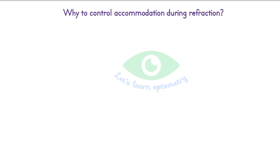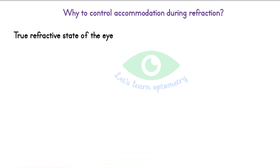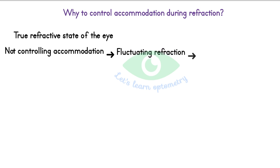Proper accommodation control is probably the most important factor in the refraction process. By controlling the accommodation, we can find out the true refractive state of the eye without any additional effort by the accommodation. If we do not properly control the accommodation, the refraction end point will fluctuate, leading to wrong prescriptions.